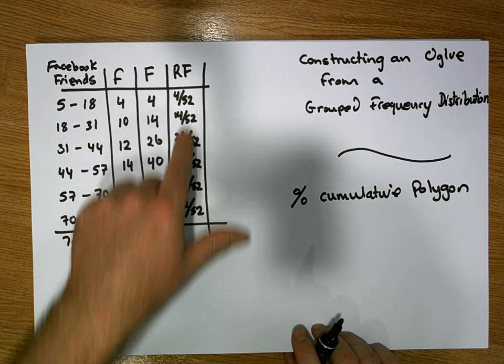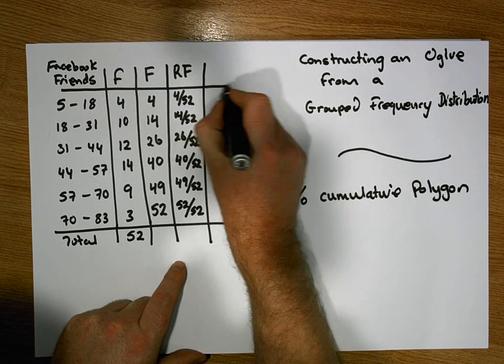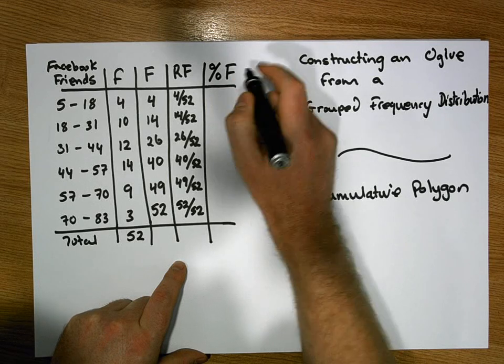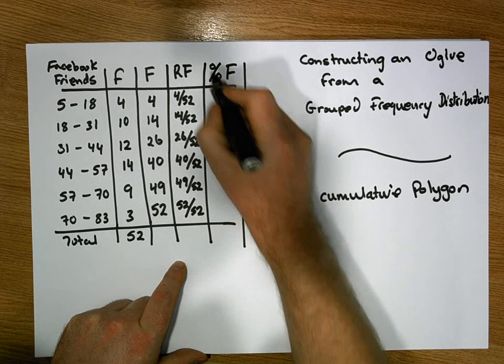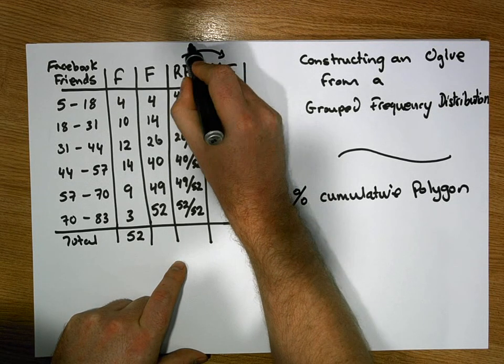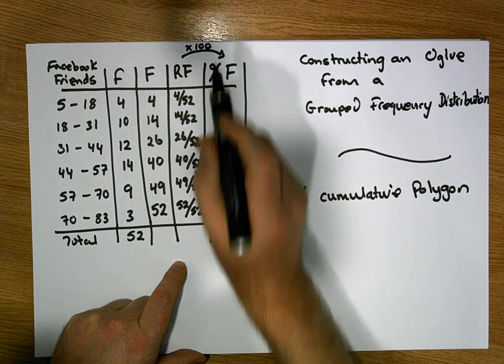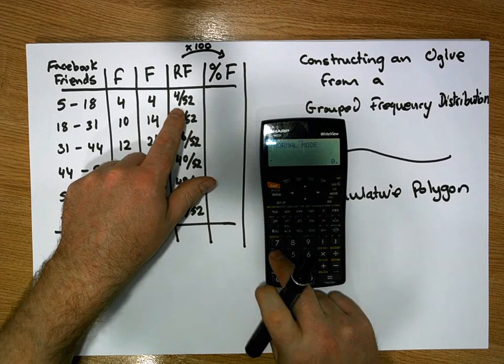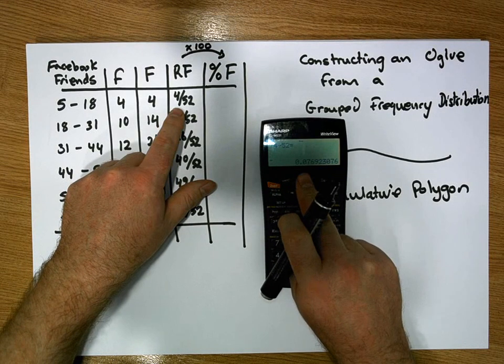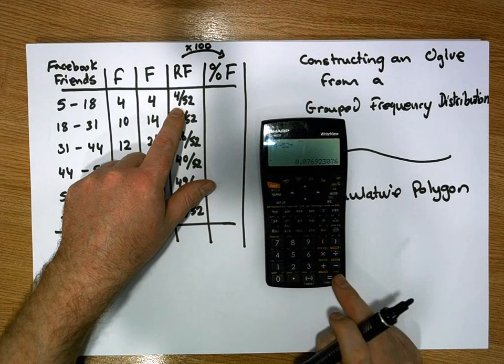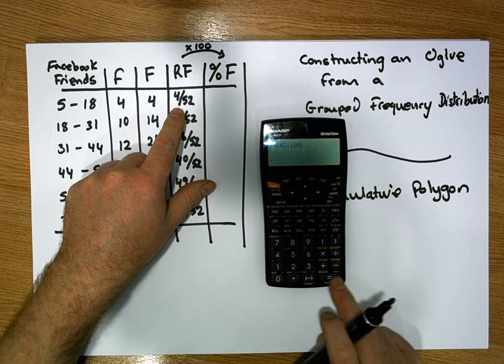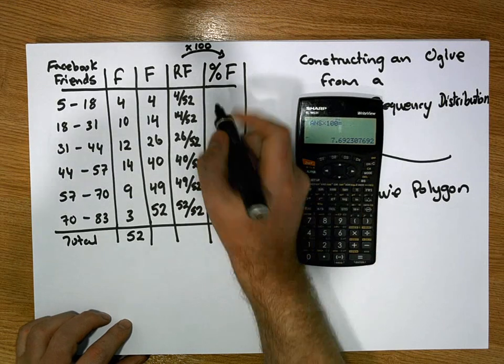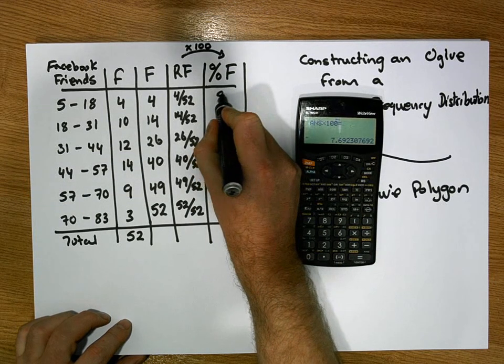So we're nearly there. Now that we have the relative frequencies, we scale the relative frequencies up into percentages to give us our percentage capital F column. Simply all we do is we multiply the relative frequencies, multiply them by 100. Now we can use a calculator to do this. For example 4 divided by 52 is equal to 0.0769 and so on. Multiply that by 100 to give us 7.69. And I'm going to round to the nearest whole number, so this is equivalent to 8.